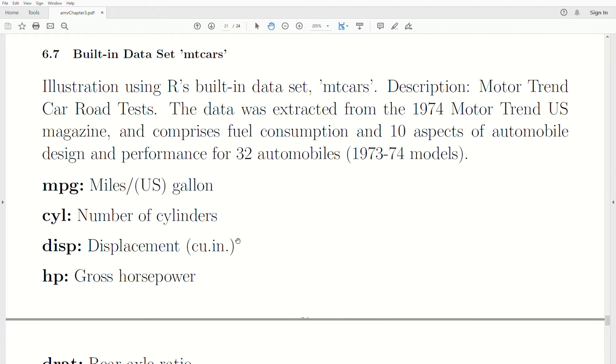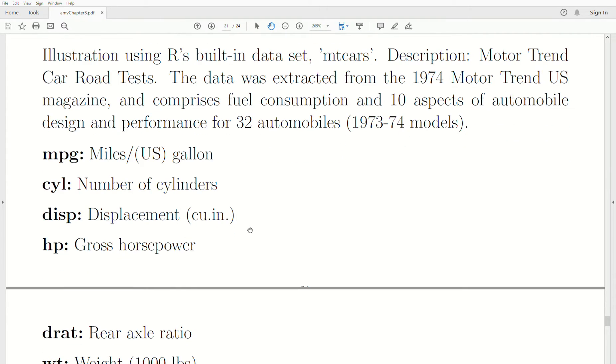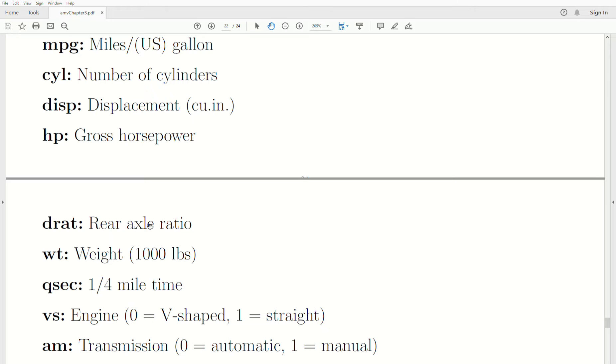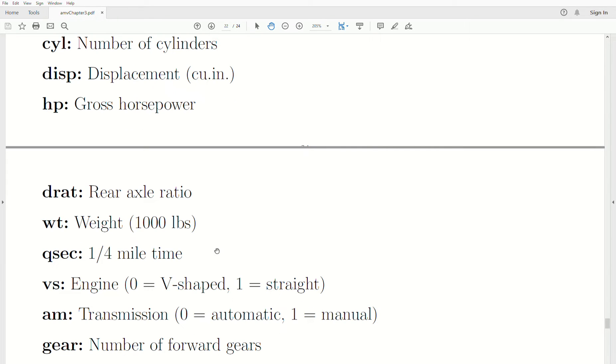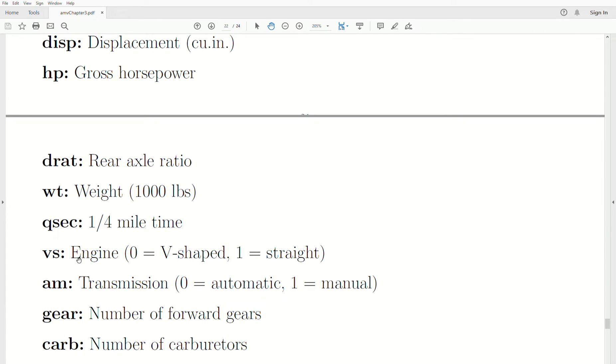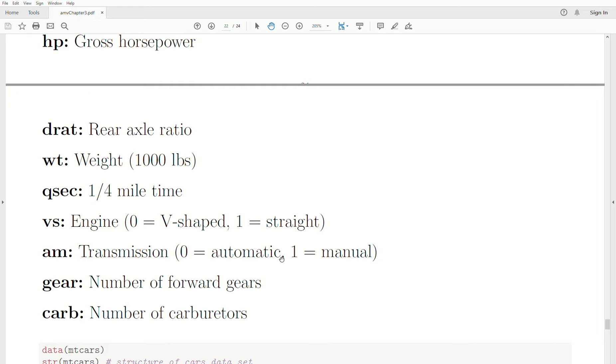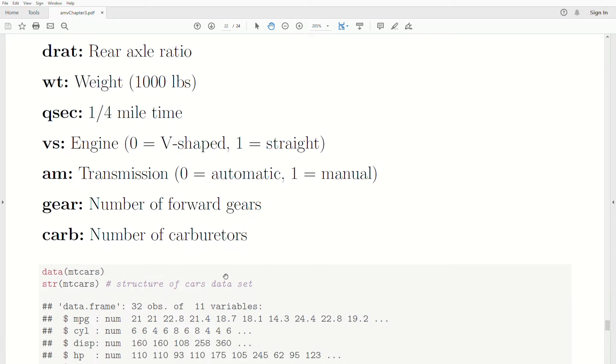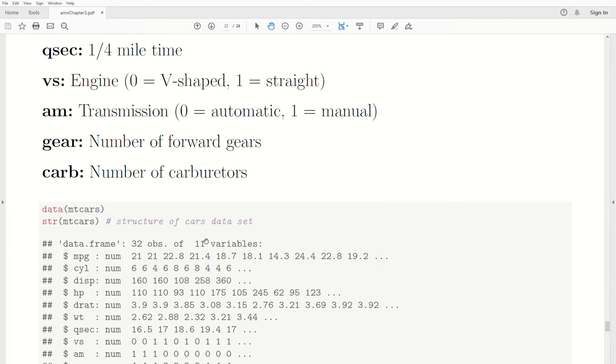The variable names: MPG stands for miles per gallon. We have number of cylinders, displacement of the pistons, the gross horsepower, the rear axle ratio, the weight of the vehicle, how fast it goes in a quarter mile. The engine shape is V-shaped or straight. That has to do with the design of the engine. Is it automatic transmission or manual? The number of forward gears and the number of carburetors used. That's a very brief description of that data set.